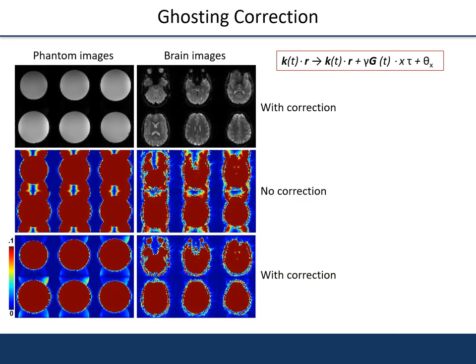Similar to EPI, the alternating nature of the CEPI echo train leads to ghosting artifacts due to gradient imperfections. A linear model was used to correct the K-space prior to reconstruction. This way, ghosting artifacts could be reduced to a few percent of image intensity. Brain and phantom images before and after the correction are shown on this slide.